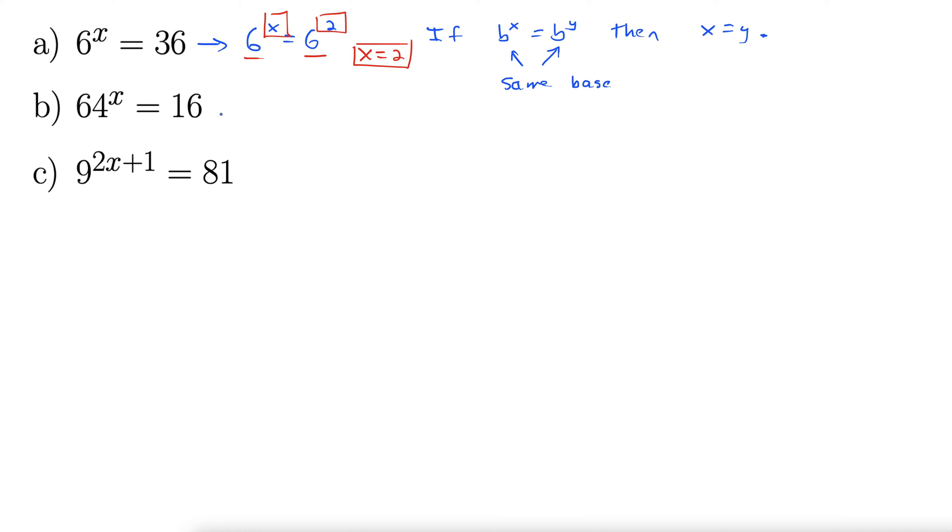Let's take a look at part b here. Part b, 64 to the x. We want to make these bases the same. There's actually a couple ways to do this. 64, we can think of that as a power of 4.